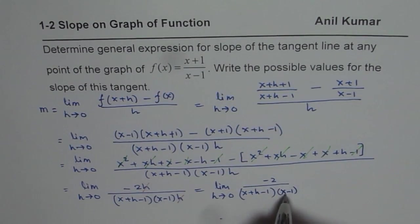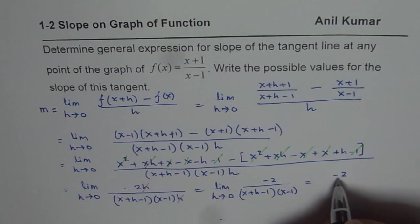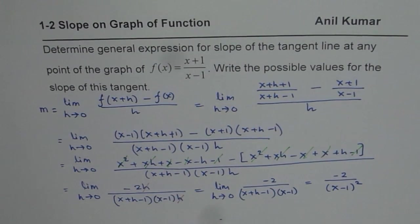Now, we can substitute h as 0 here. So what do we get? We get (x-1) times (x-1). So we get -2/(x-1)². That is what we are going to get. And this is the general expression which represents slope of the tangent line at any point on the given function.